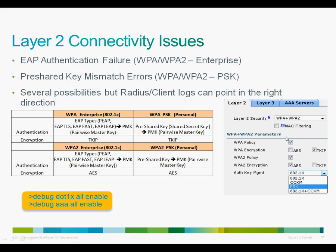The configuration, if you look on the right hand side, is pretty straightforward. Under the layer 2 tab, you would select WPA plus WPA2 and then select WPA with TKIP and WPA2 with AES. If you were to do 802.1x based authentication, which is the EAP methods, you would use 802.1x. If you were to use the pre-shared key, you would select the PSK from the drop down menu. Additional debug commands like debug 802.1x all enable and debug AAA all enable can be helpful to provide additional details of what the client is doing.